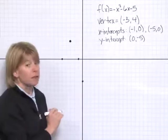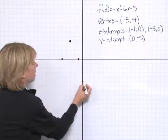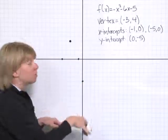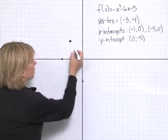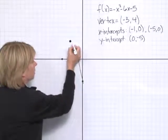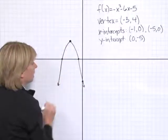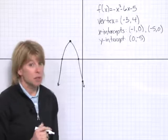Now remember, when we graph a quadratic function, we get a u-shape. And this happens to be a u-shape opening downward. So there is the graph of our quadratic function.